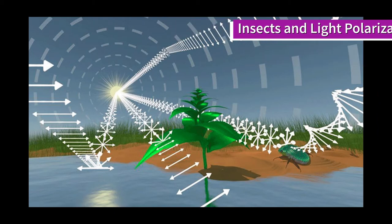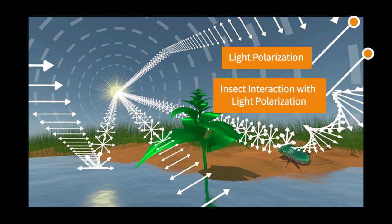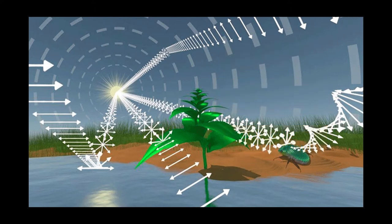In this video I will start by talking briefly about what light polarization is, then talk about how insects interact much more with light polarization than humans do, including the special case of scarab beetles and circularly polarized light. Then I'll finish with some practical applications and why you should care at all about insects interacting with light polarization.